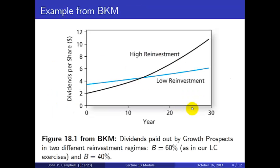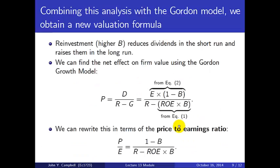Here's an example from Bodie, Kane and Marcus. They have a company called Growth Prospects. The black line corresponds to a ploughback or retention ratio of 60% and the blue line to one of 40%. You can see that with a higher reinvestment rate, dividends are lower for the first roughly 12 or 13 years, and they are higher subsequently. Putting this all together, we can put this into the Gordon model and obtain a new valuation formula.